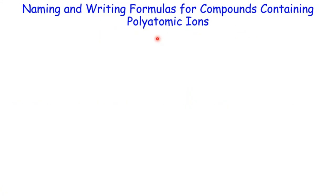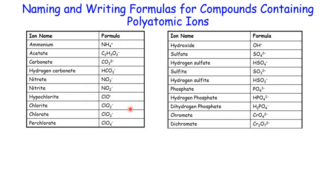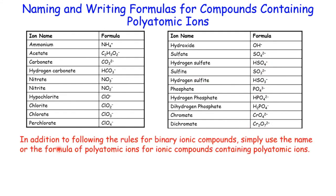Now let's work on compounds containing polyatomic ions. Remember we learned those polyatomic ions in previous lecture. When you work on the name or formula for compounds containing polyatomic ions, you follow the same rule as for binary ionic compounds. Just in addition to that, we will use the name or the formula of the polyatomic ions.